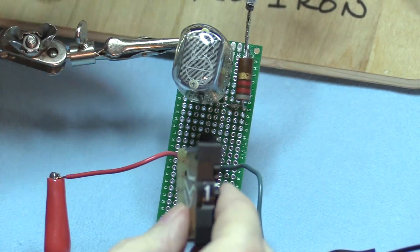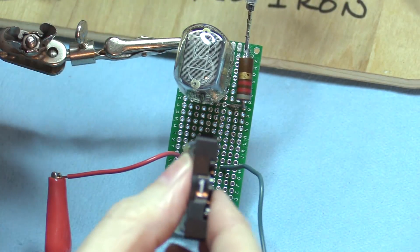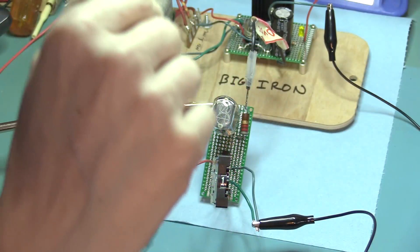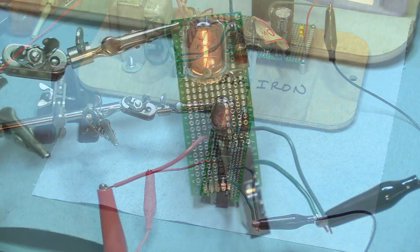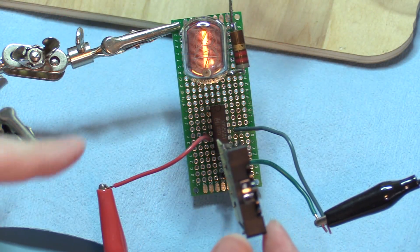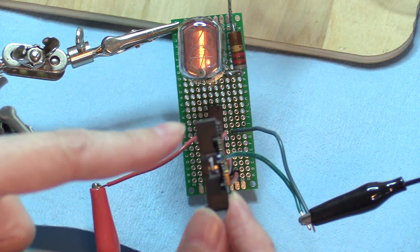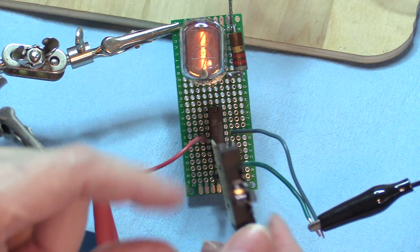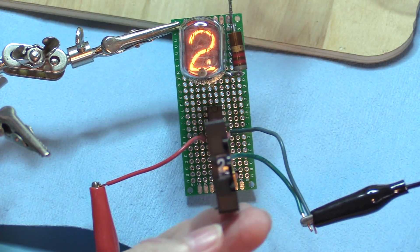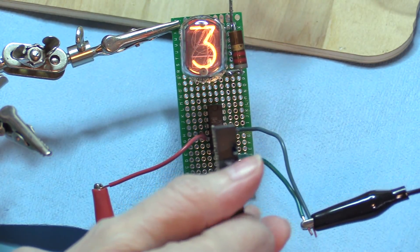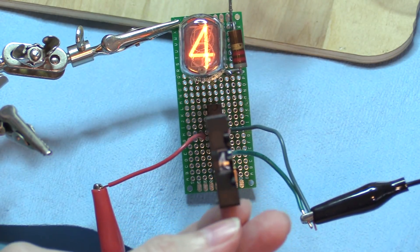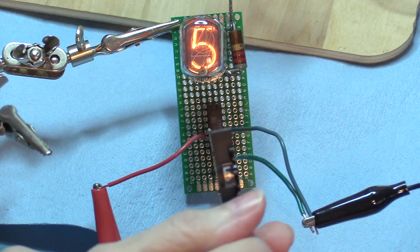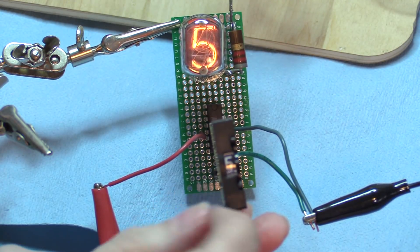I've hooked one up here to this Nixie tube, and I'll plug in big iron here. So I've got a 1 on the thumbwheel, and I've got a 1 on the Nixie. I'll flip it, here we've got 2, 3, 4, 5, got a little reflection here but it does say 5.